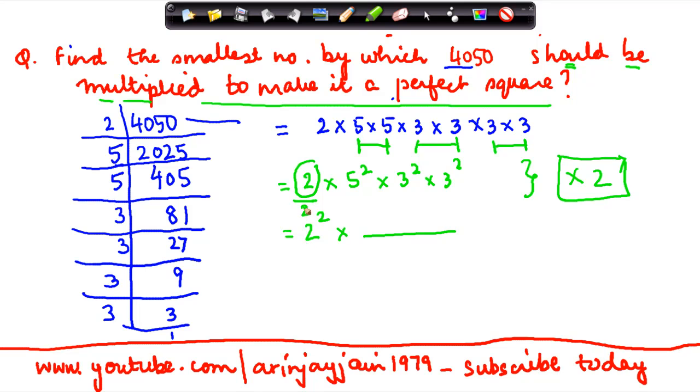So multiplication and division questions like this, where you are told to find out a number which you need to multiply or divide to make a particular number a perfect square, are simple. The only thing you need to do here is find out the prime factors, see which of the factors is not appearing as a square number, and then you basically multiply it by that number to make it a perfect square.